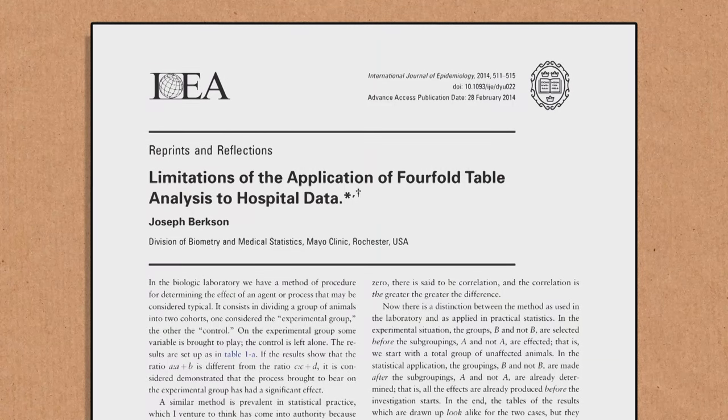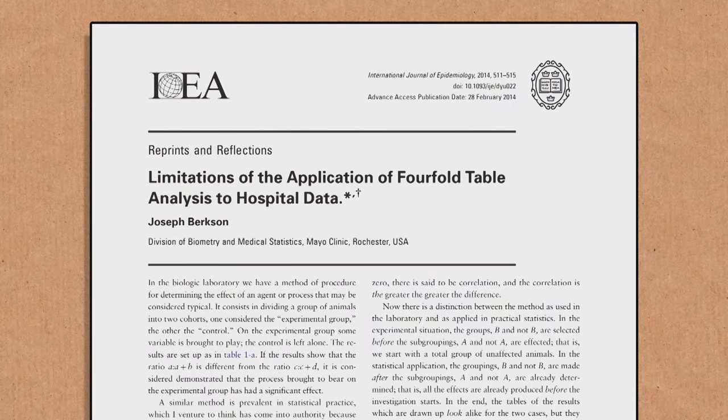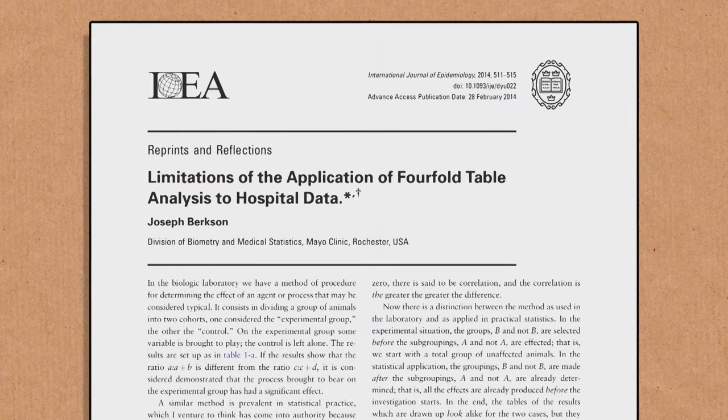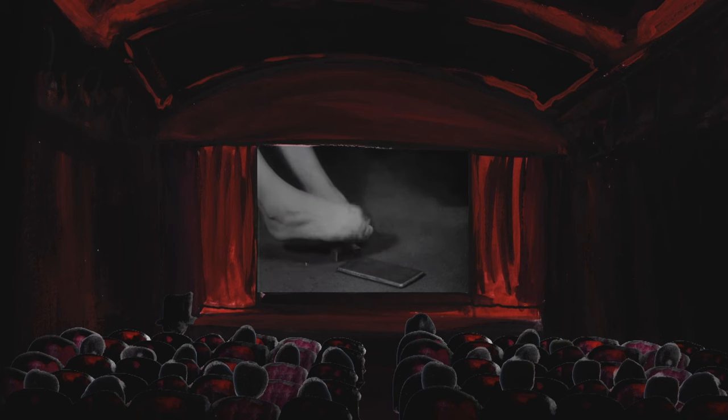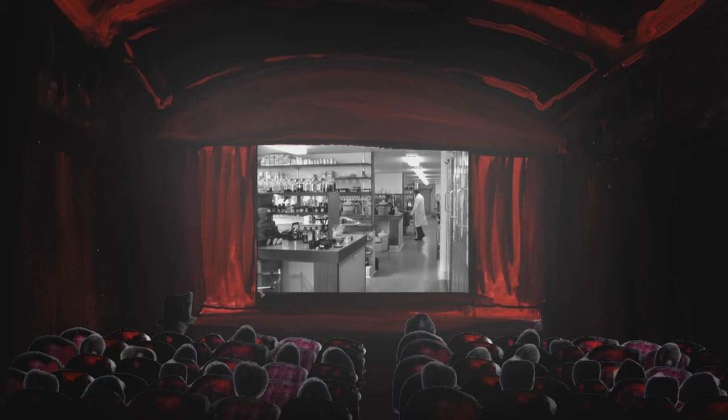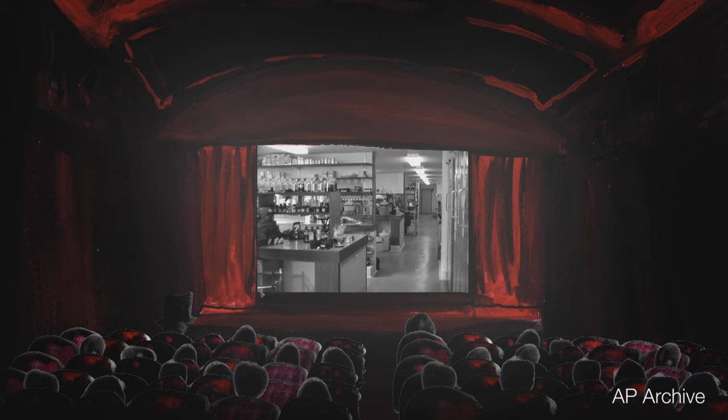So this here is Berkson's Paradox, it was discovered by a guy called Joseph Berkson, after he was working in hospitals and trying to collect data on the different diseases that people had, and found these negative correlations between things that you wouldn't necessarily expect. So let's say that you had diabetes and severe ingrown toenails, for instance.